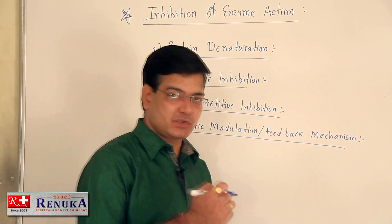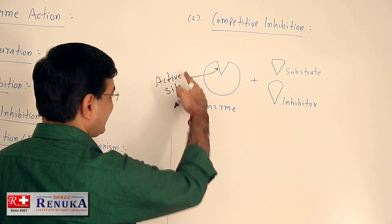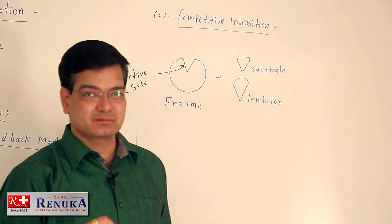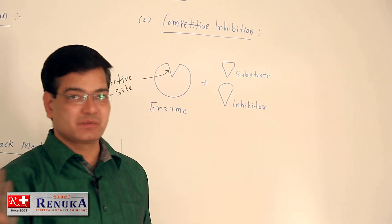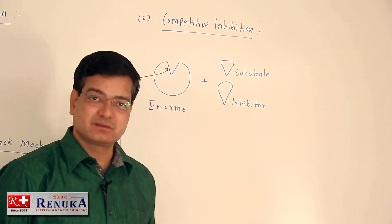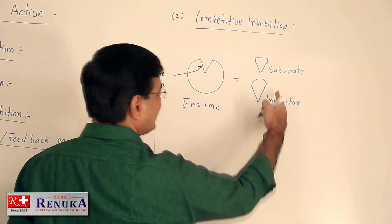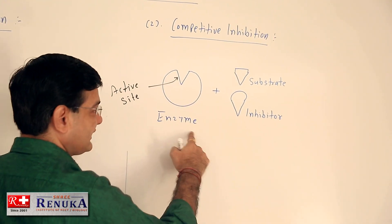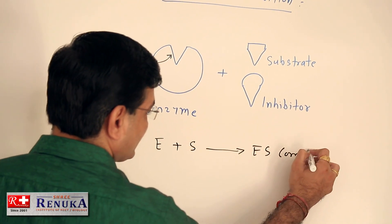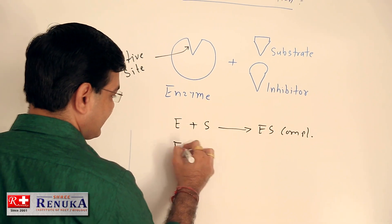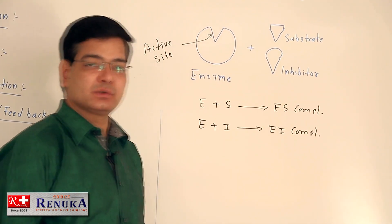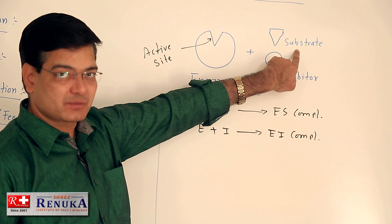The second mechanism is competitive inhibition. The enzyme has an active site containing polar amino acids that can react with either the substrate or the inhibitor. It is called competitive inhibition because the substrate has to compete with the inhibitor to bind with the active site. While substrate binds to form an enzyme-substrate complex, an inhibitor binds to form an EI complex.